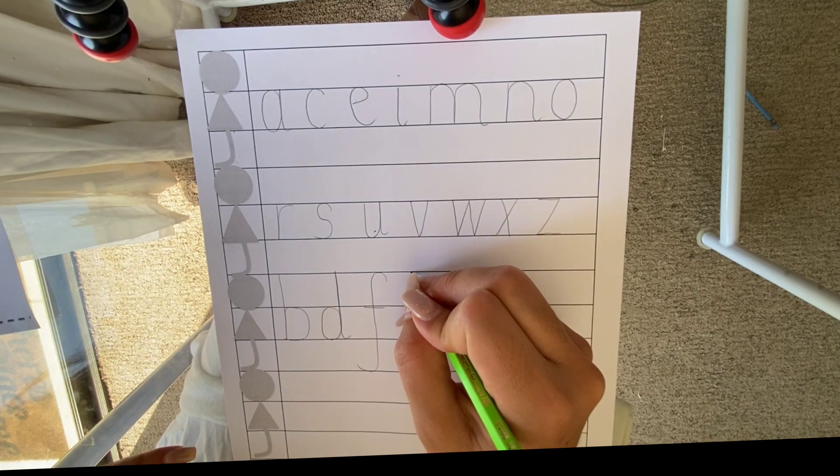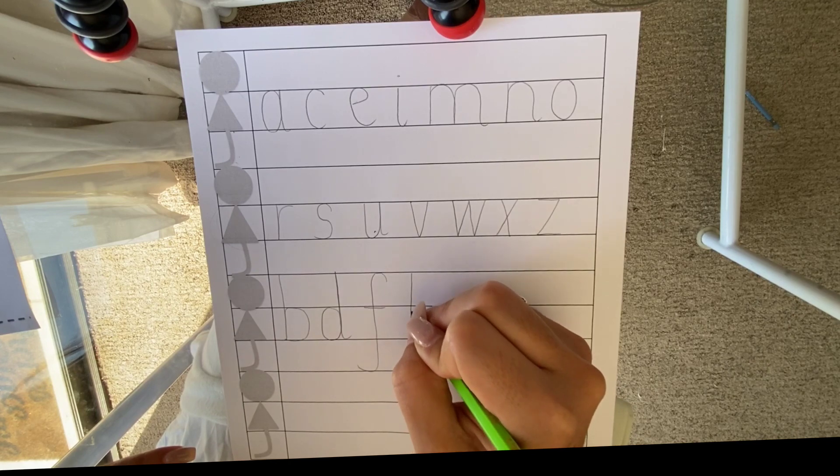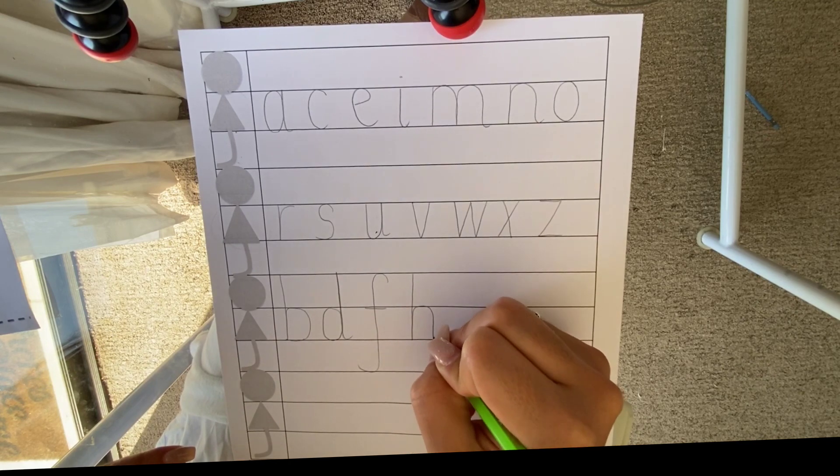Then we have Harry Hatman who starts at the top of Oscar's head, runs down to the bottom of his tummy, to the top of his tummy and flick.